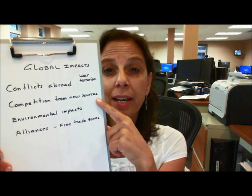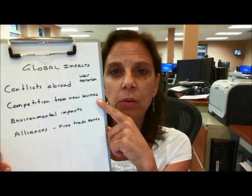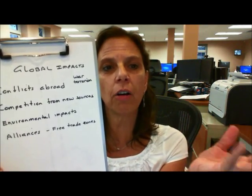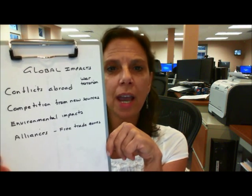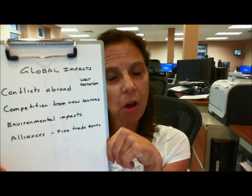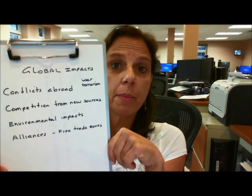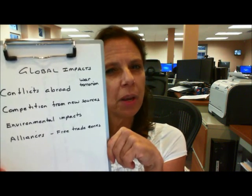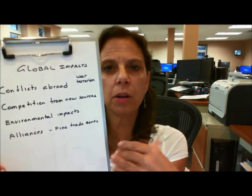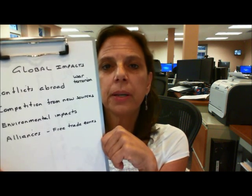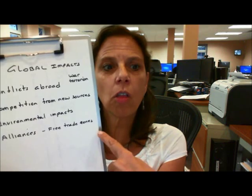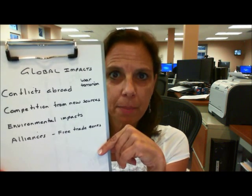Environmental impacts: we have many laws in the United States about what we can and cannot do, but those laws don't exist in China, for example. The question is, does that create an unfair competitive environment, because we have charges and costs related to protecting the environment that our firms have to pay, and if their firms don't have to pay those same costs, they can offer products and services at a much lower price than ours? That's a big question. And finally, there are alliances and free trade zones — the World Trade Organization, trade agreements in the European zone, and agreements between us and Latin America — all of which can affect the global economy.